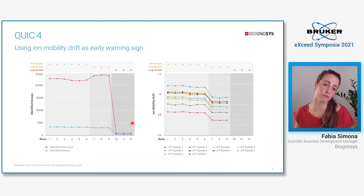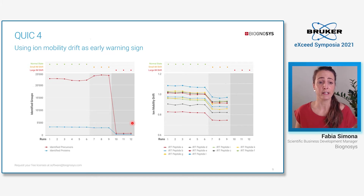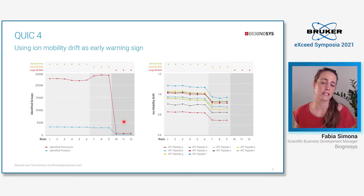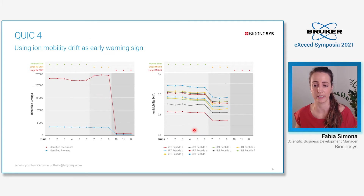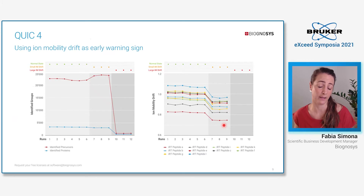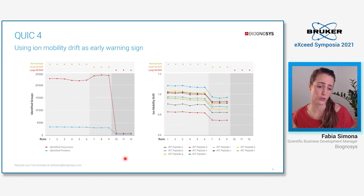We recently released QUIC 4, which also features support for PASEF data. The benefit here is the use of ion mobility drift as an early warning sign. So instead of waiting until a drop in instrument performance leads to a drop in identifications, by using the ion mobility drift — which is based on the iRT standard peptides — you can timely intervene, since you will notice a drift way before an identification drop. QUIC is free, so you can request as many licenses as you want at software@biognosys.com.